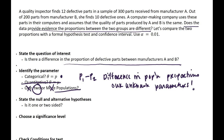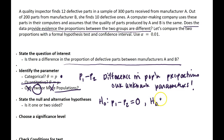Now we want to state the null and alternative hypotheses. Our null hypothesis is always a statement of equality, so we use our parameter P1 minus P2 equals zero — this means we're testing whether P1 is equal to P2. The alternative is that P1 minus P2 is not equal to zero, meaning the two proportions from the populations are not the same as each other.